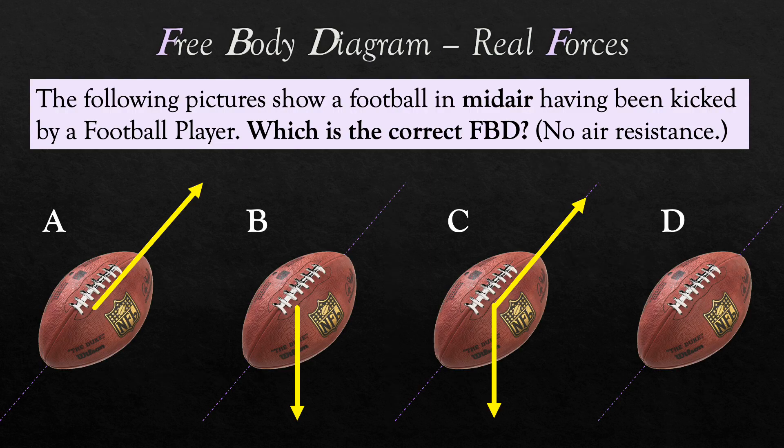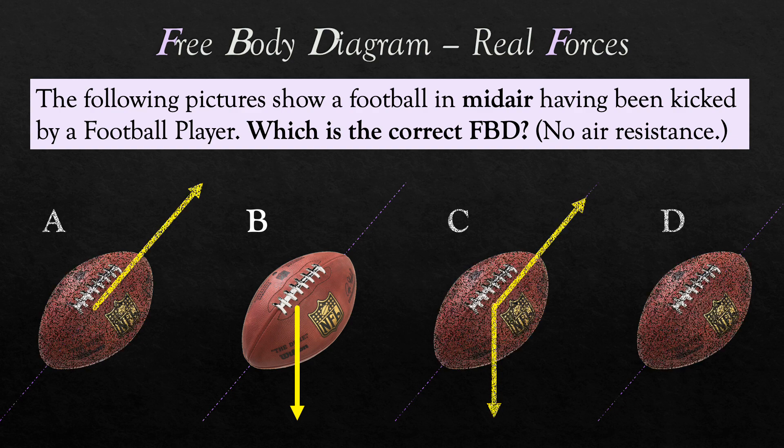So let's do a quick thing about free body diagrams because we're going to talk mainly today about projectiles. So let's say I kick a football in midair and the dotted purple line tells you the direction that the football is currently going. The question is what is the correct free body diagram? A free body diagram is a diagram that shows you the real forces acting on the object. So is it A, B, C, or D? Which one is the correct free body diagram for something in midair? The correct answer is B.